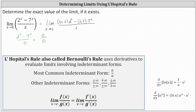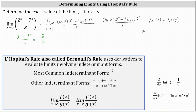Now in this form, let's determine the limit by performing direct substitution. Substituting zero for x, we have natural log two times two to the power of zero minus natural log seven times seven to the power of zero, all divided by one. Simplifying, two to the zero and seven to the zero are both one, so the exact value of the limit is natural log two minus natural log seven, which as a decimal approximation is approximately negative 1.2528. Since this question asks for the exact value, the answer is natural log two minus natural log seven.